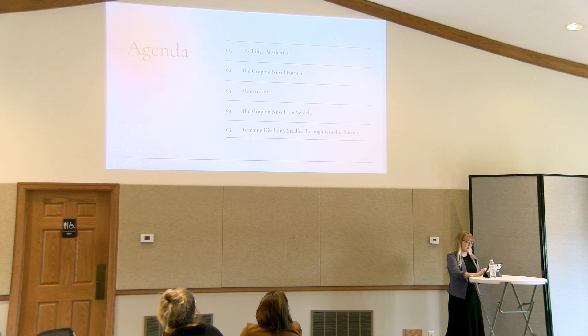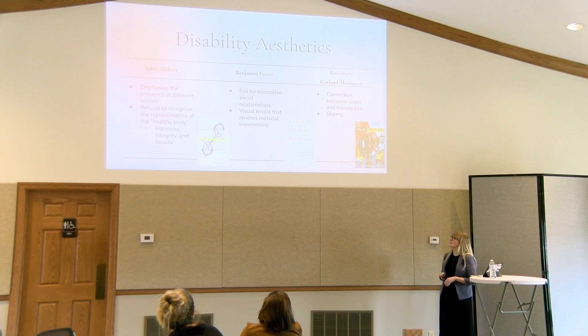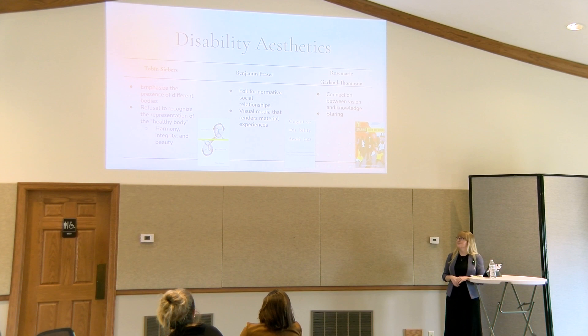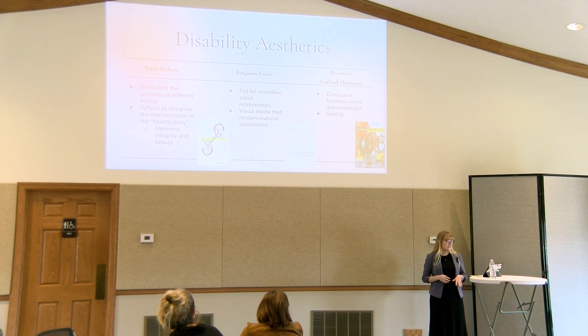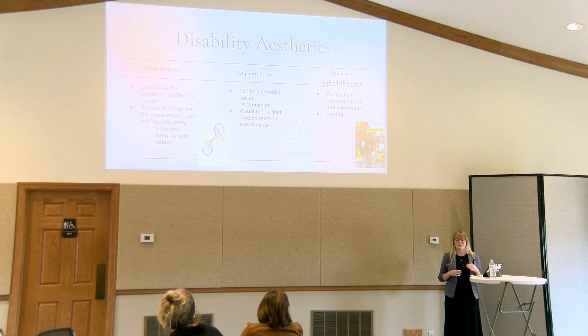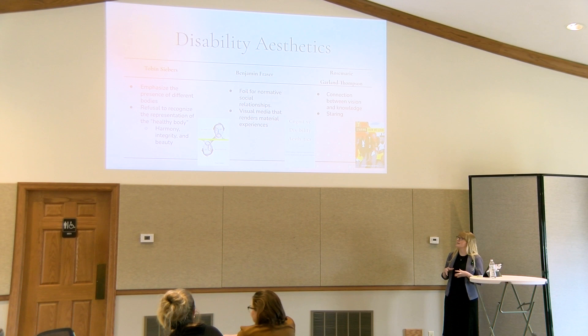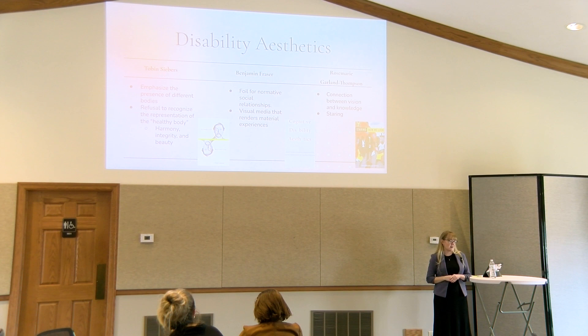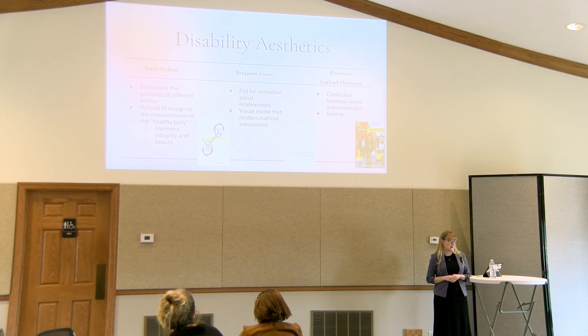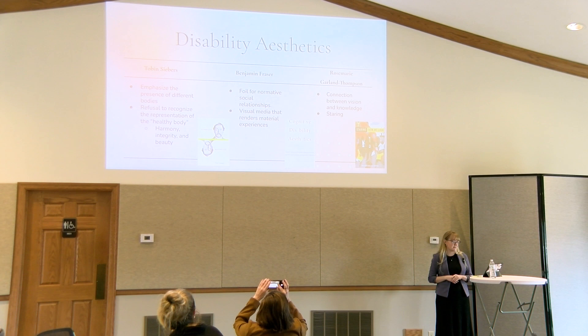The field of disability aesthetics basically seeks to emphasize the presence of different bodies and minds. Three names kept coming up most in my research. Tobin Siebers wrote the book literally on disability aesthetics. In his book, he basically refuses to recognize the representation of the healthy body — and the body's definition of harmony, integrity, and beauty — as the sole determination of the aesthetic of the body. Benjamin Frazier builds on Siebers' work but focuses more on cognitive aesthetics. He points out the ways that in literature, disabilities can often be a foil for normative social relationships, acting as a plot device to move the story forward rather than something valuable in and of itself.